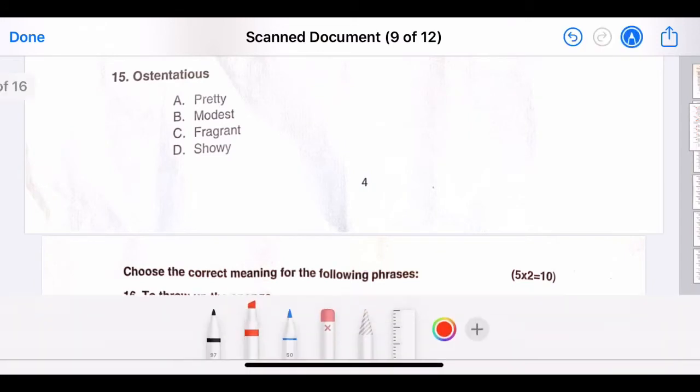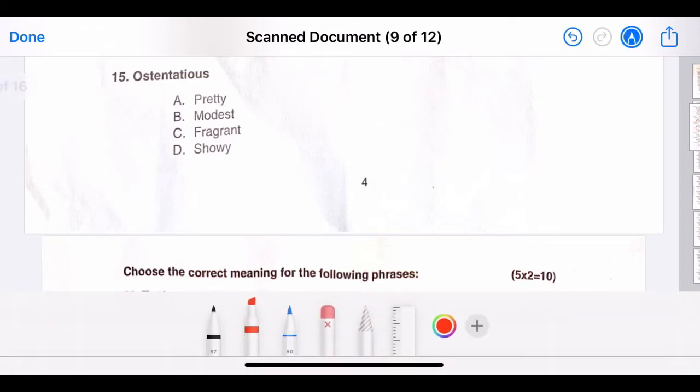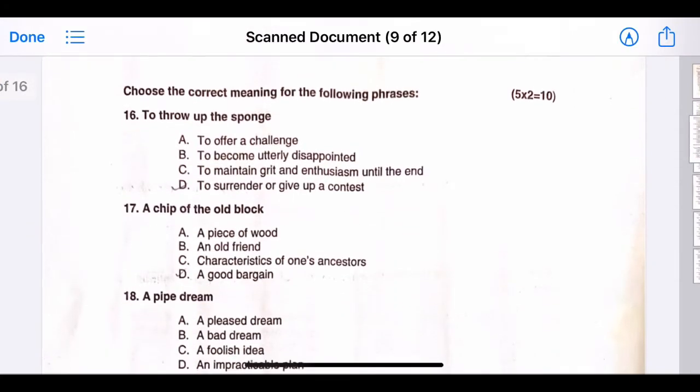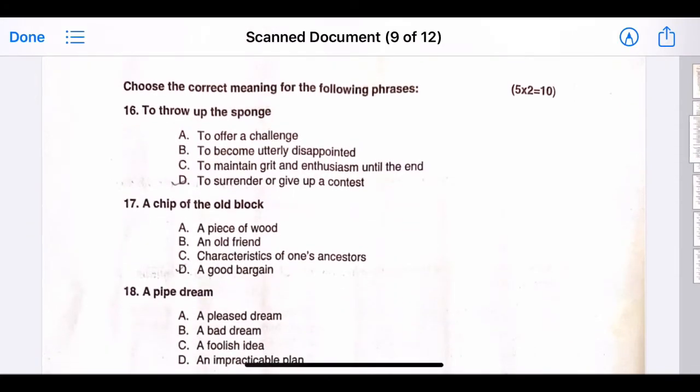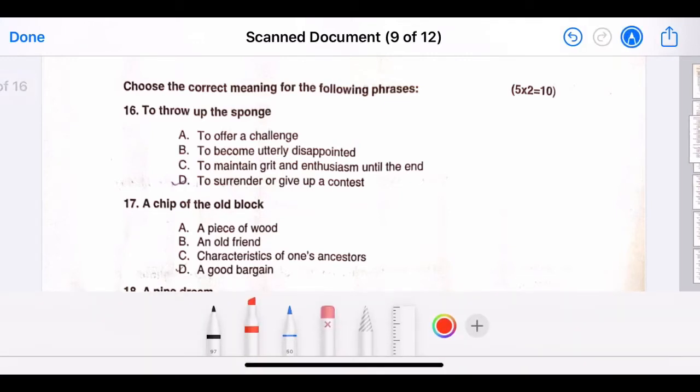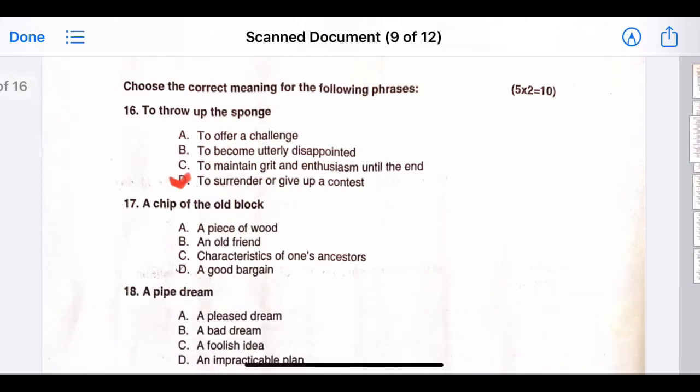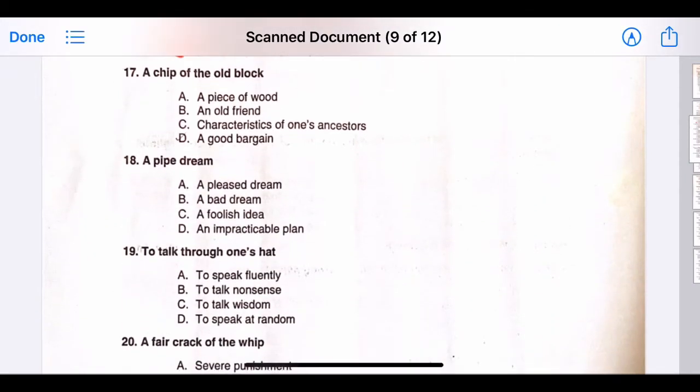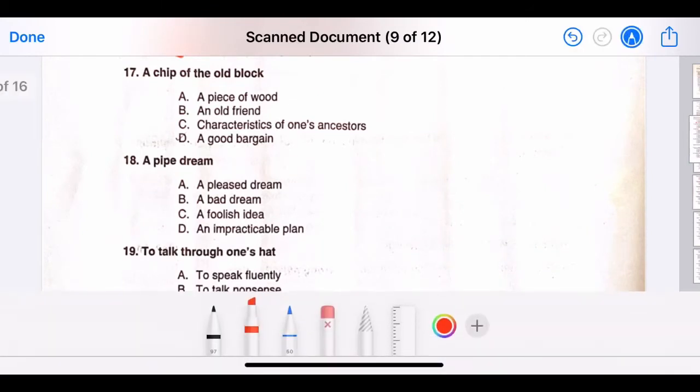Fifteen, ostentatious. The correct answer is option D, showy. Choose the correct meaning for the following phrases. Sixteen, to throw up the sponge. The correct answer is to surrender or give up a contest, that is option D. Seventeen, a chip of the old block. The correct answer is option C, characteristic of one's ancestors.